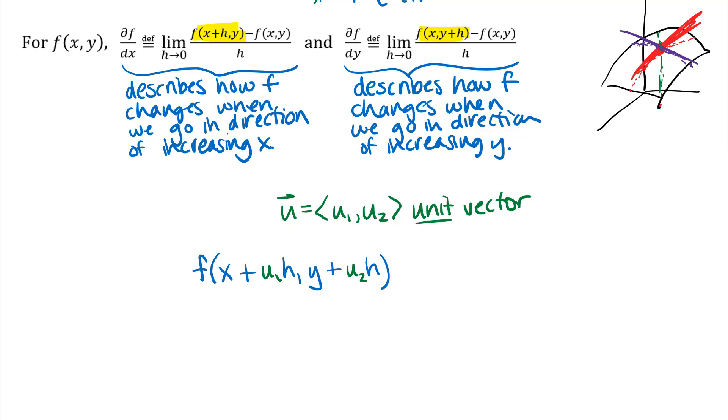So we've got our function incremented away from our base point. And then we want to subtract our function at our base point. And then we want to divide by h and take the limit as h approaches zero. So this is what we're going to use to define our directional derivative.